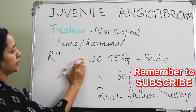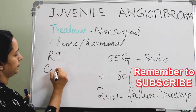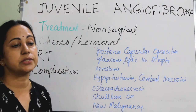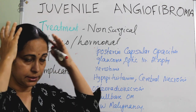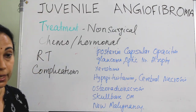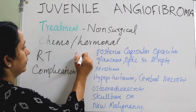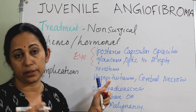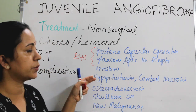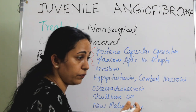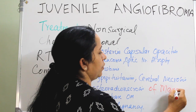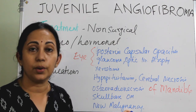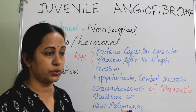In RT there are many complications. Since RT is indicated in cases of extensive intracranial extension of JNA, the cranial cavity and orbit are exposed to radiation. In the eye, you can have posterior lens capsular opacity, glaucoma, and optic nerve atrophy. Xerostomia can also occur. Inside the cranial cavity: hypopituitary subcortical necrosis, osteoradionecrosis of mandible, skull base osteomyelitis, and also chance of development of new head and neck malignancies and potential malignant transformation of JNA.